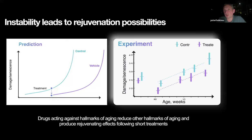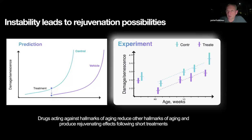In unstable systems you can produce rejuvenation, and that's exactly what we see. In our experiments, the biological age is on the vertical axis and weeks of age on the horizontal axis. The first two points are untreated animals; then an intervention reduces the order parameter. For the rest of their lives, with no therapeutic intervention present anymore, the treated group is always below the control — a powerful demonstration of dynamic instability.